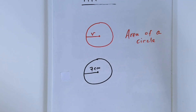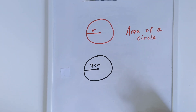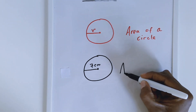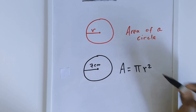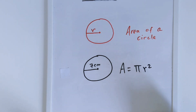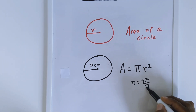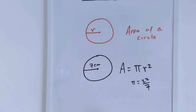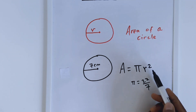Let us start with an example of finding the area of a circle, as the one shown in this example here. This circle has a radius of 7 cm, and in order to find the area of the circle, we use the formula: area of a circle is equal to pi r squared, where pi can be 22 over 7. As long as you have the radius, you just plug in that number into the formula.